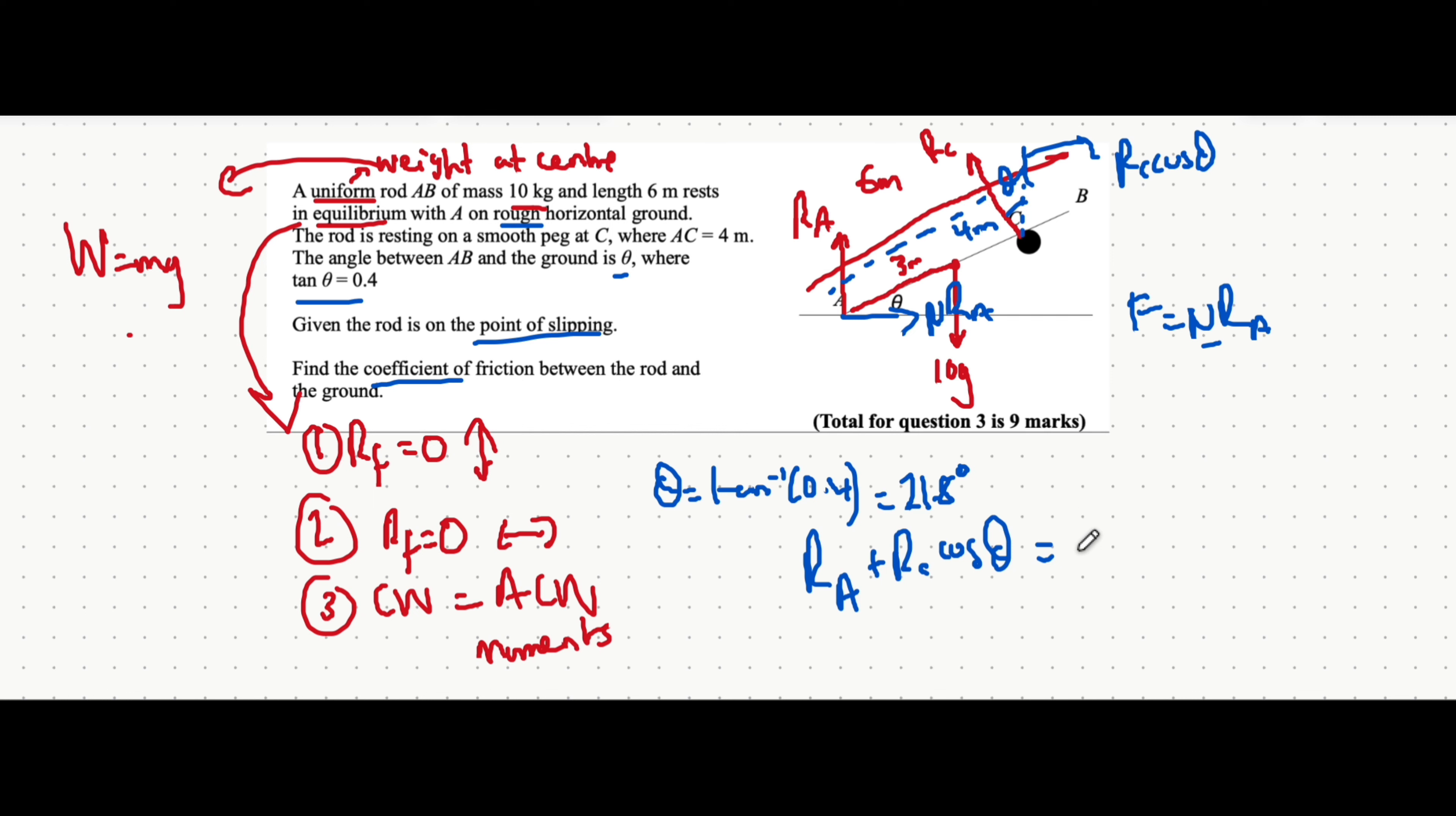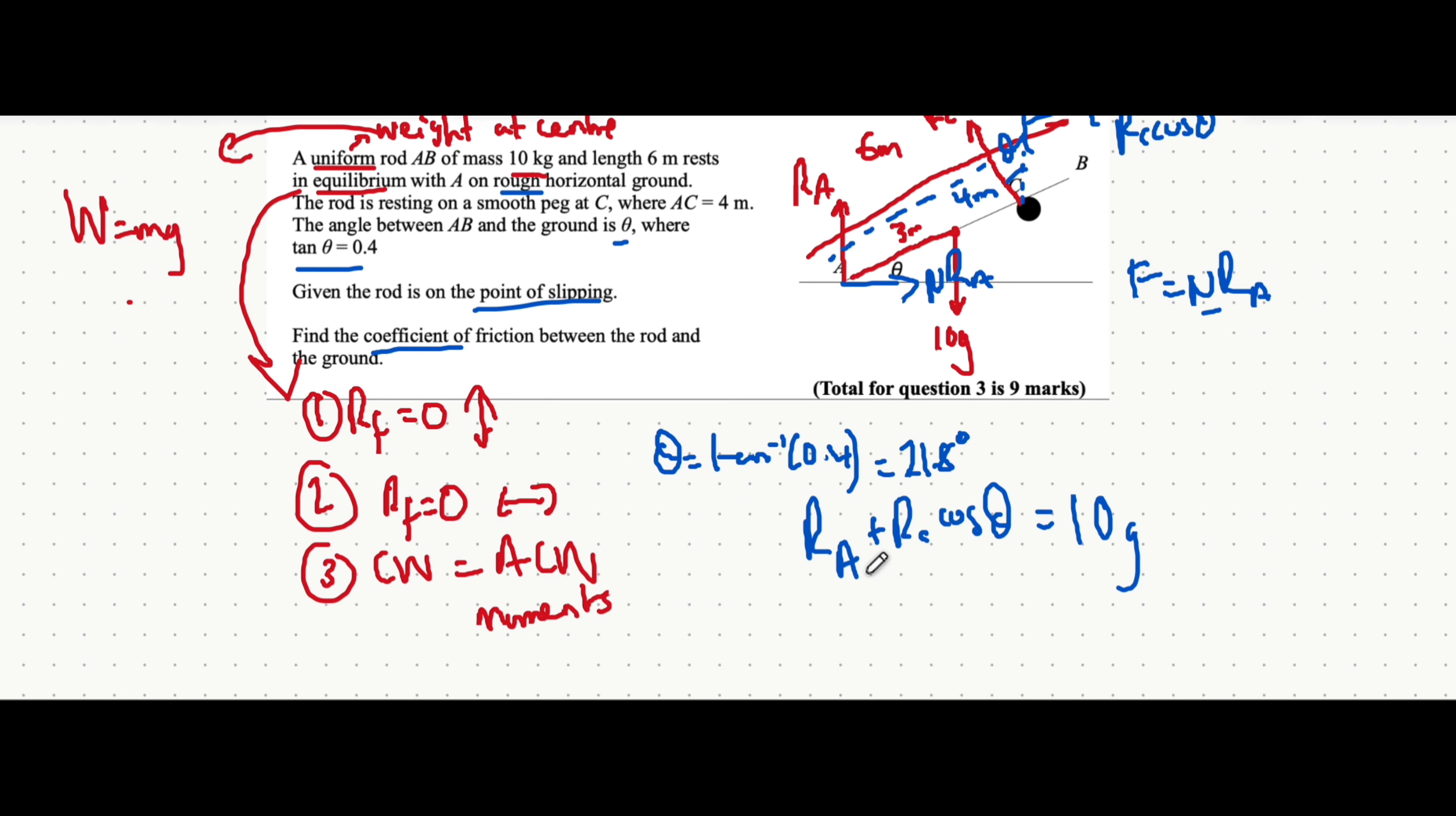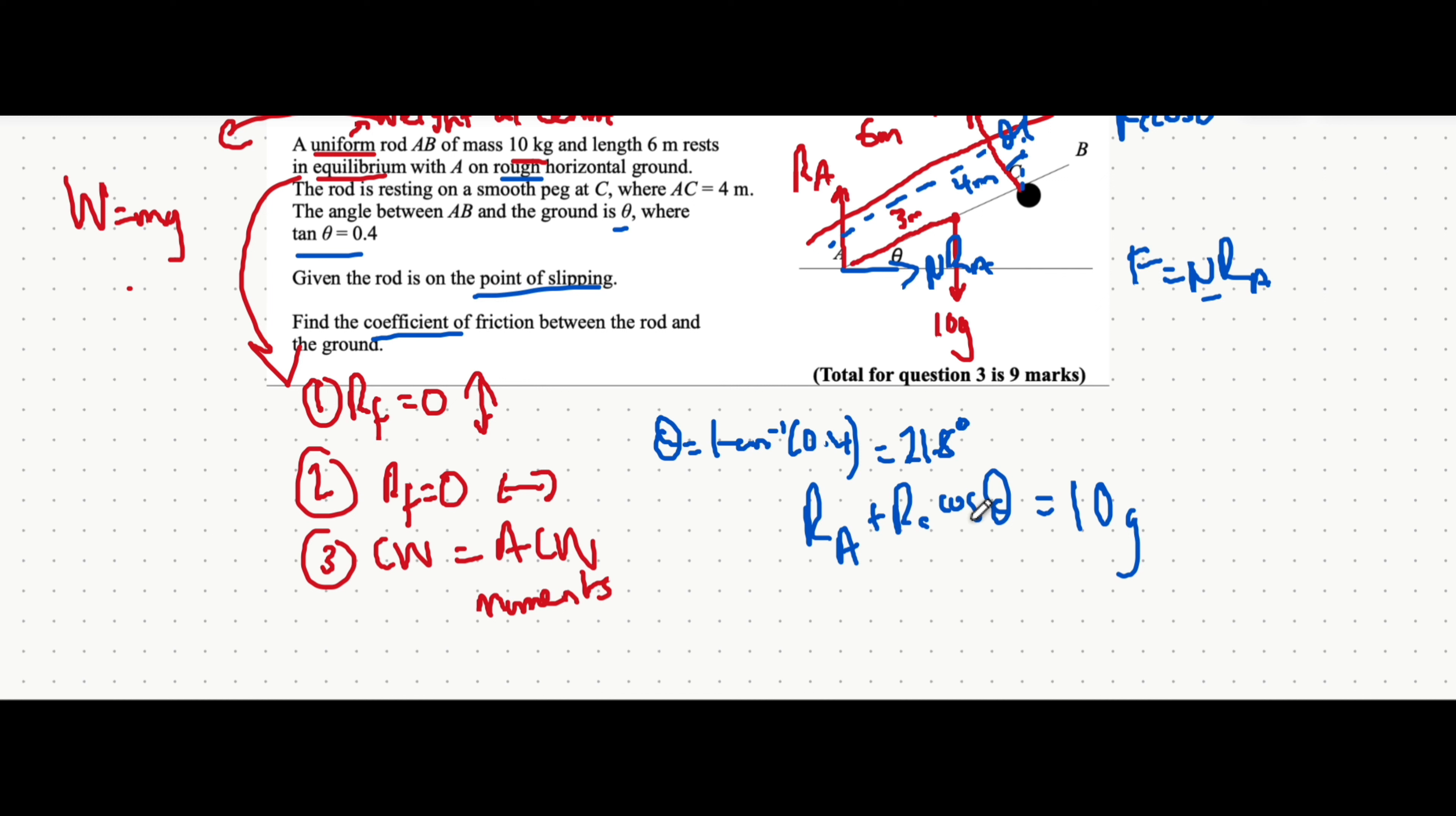So we say R_A plus R_C cos theta is all equal to the downward forces acting on the object. What downward forces act on the object? It's the weight, 10g. We won't really bother putting 21.8 into this yet because we're still going to have two unknowns in the equation. That means that we have to go further, use steps two and three to hopefully find one of those unknowns first.